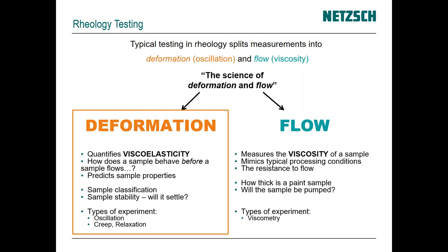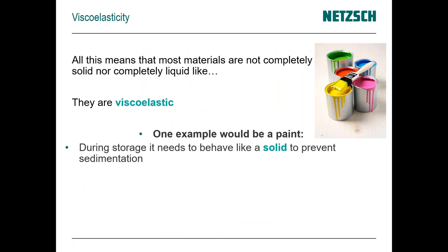In the flow category we're mimicking most processes — we can look at the resistance to flow, identify how thick or thin something is, how something like paint or a food product might pump. The typical experiments are viscometry. The key takeaway is that all materials are not completely solid or completely liquid, and we want to identify how different they are in these modes. Viscoelastic sits between purely viscous — simple flow — and elastic, which is more solid-like.